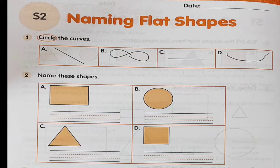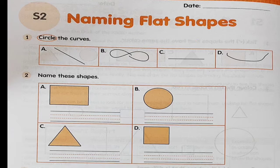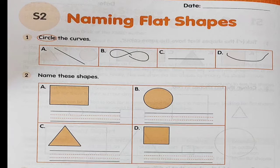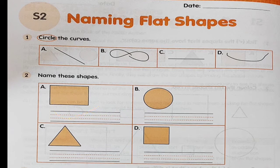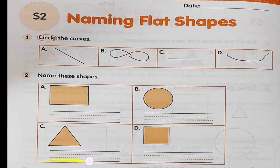If you look at question 1, it says circle the curves — only the curves. And in question 2, name these shapes. So you've got to look at these shapes. What shape is this? Then you write the name of the shape here. What shape is this? Write the name of the shape here. What shape is this? Write the name of the shape here.